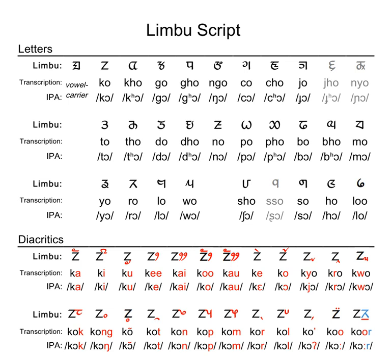Limba is an abugida. A basic letter represents both a consonant and an inherent, or default, vowel. In Limba, the inherent vowel is a. To change the inherent vowel, a diacritic is added. Some writers avoid the diacritic, considering it redundant.